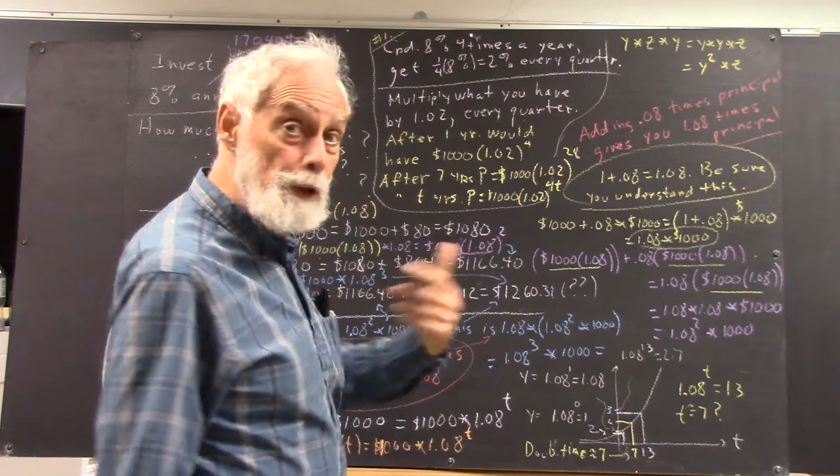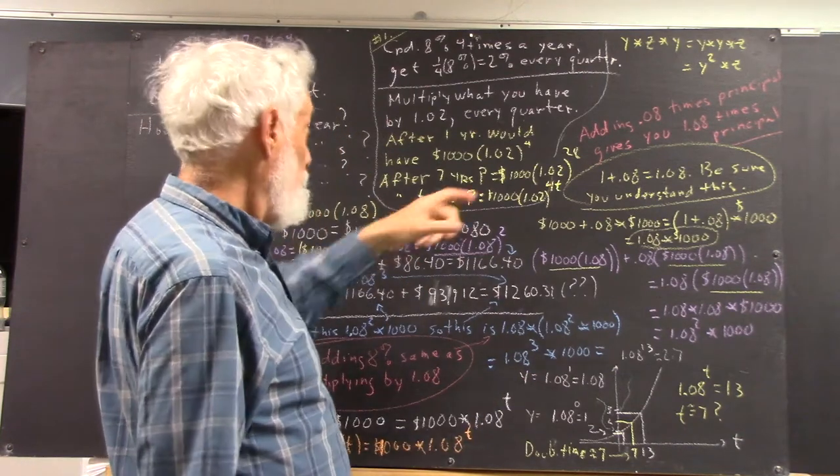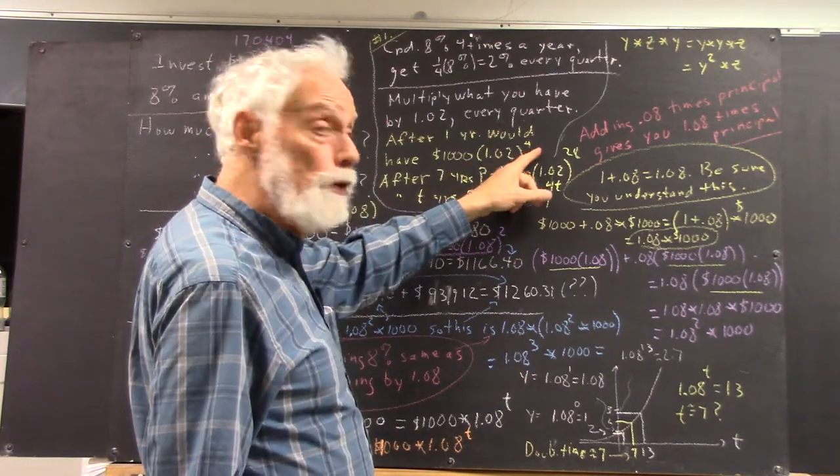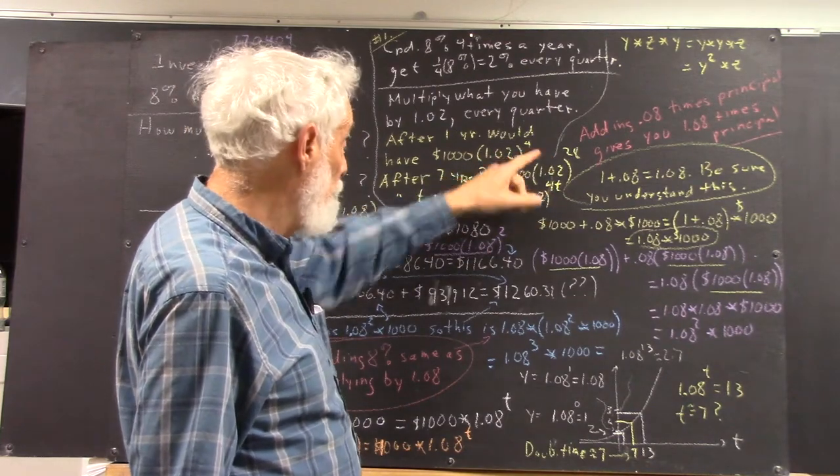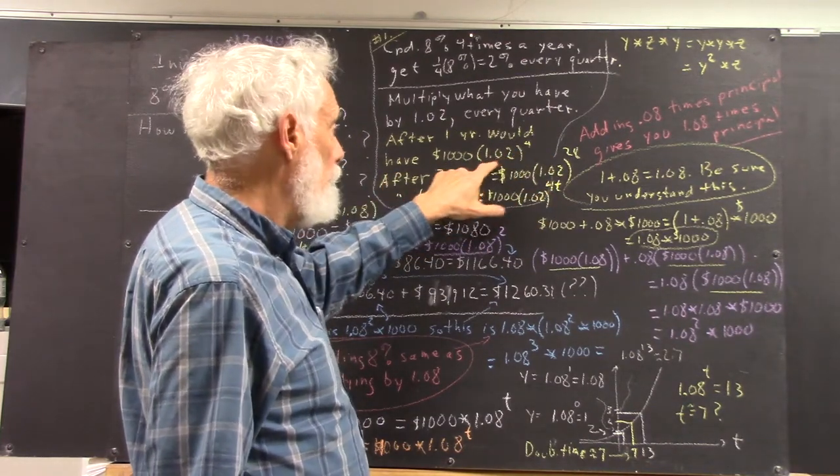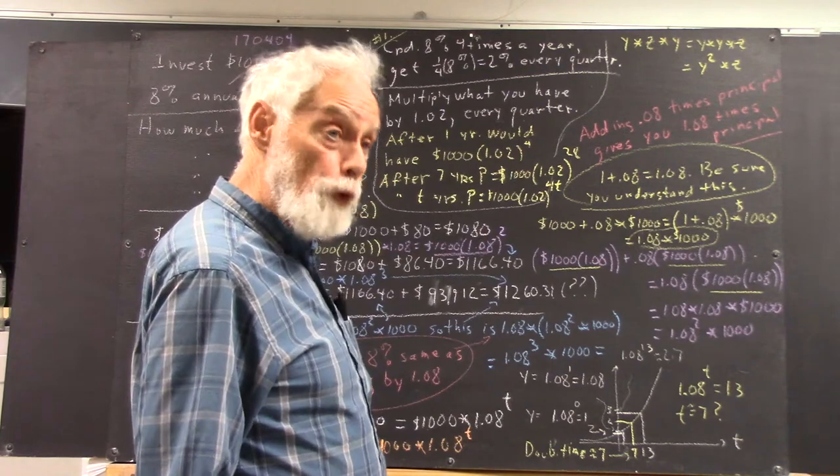After one year, what does that give you? Well, it means you'll have multiplied by 1.02 four times. At the beginning of the next year, you will have done this. So, you have $1,000 times 1.02 to the fourth.